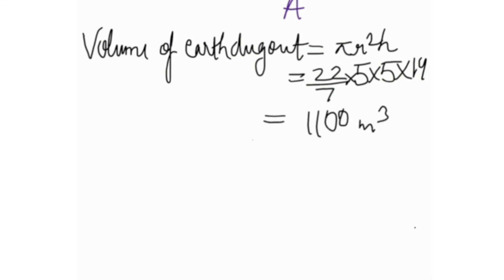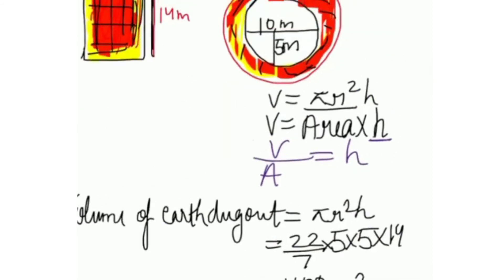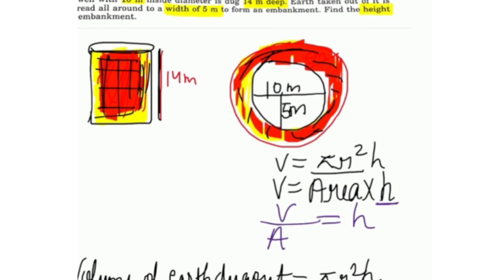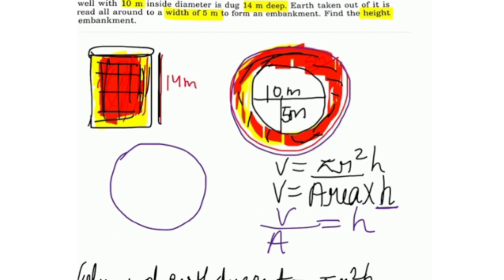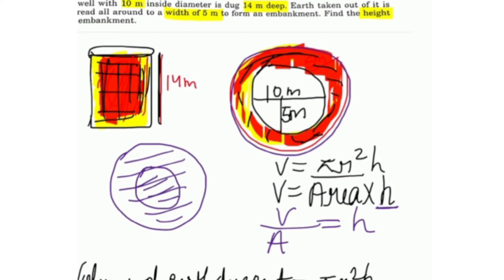Now we need to find the area of the embankment. The embankment is a circular ring built around the well. To find its area, we take the area of the big outer circle and minus the area of the well. This gives us the embankment area.